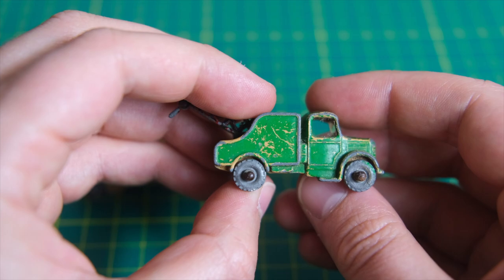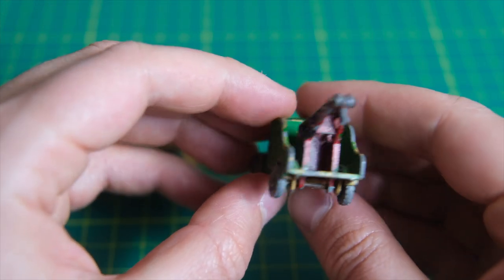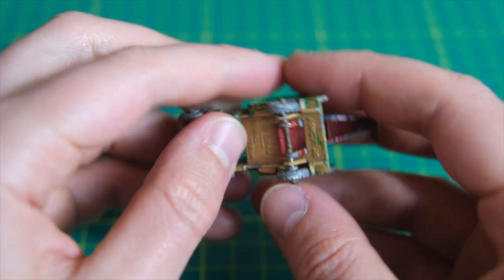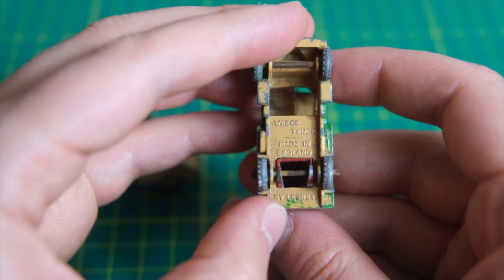This wrecker has been repainted green and black by a previous owner and requires a replacement hook. Both have crimped axles and share the same silver trim on the grille and front bumper.